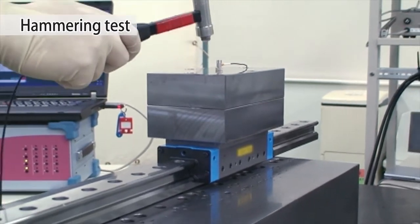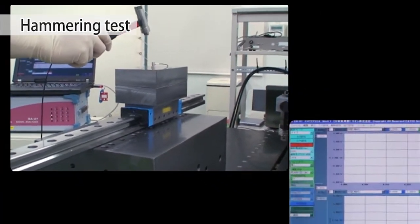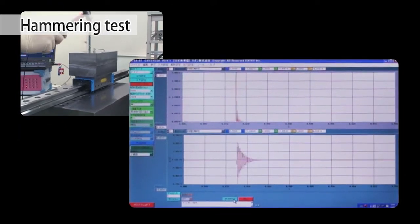Here, we can see actual hammering testing underway. Let's take a look at the actual test data. The horizontal axis shows the time and the vertical axis, the amplitude.